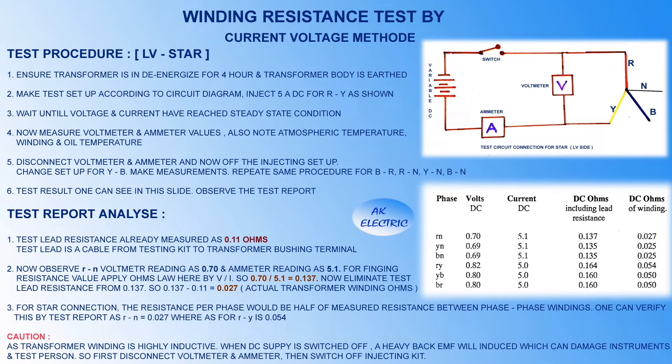Likewise we have to measure all other connections: Y-to-N, B-to-N, R-to-Y, Y-to-B, and B-to-R. For star connection, the resistance per phase is half of the measured resistance between phase-to-phase windings. One can verify this in the test report: R-to-N is 0.027 ohm whereas R-to-Y is 0.054 ohm.